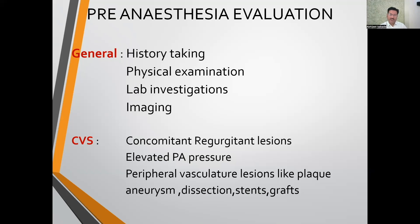In CABG cases, elevated PA pressures pre-operatively should be carefully evaluated because one lung ventilation increases RV afterload and pulmonary artery pressure. Peripheral vascular lesions — plaques, aneurysms, dissections, stents, grafts — especially in the aortoiliac and femoral vessels should be noted, since cannulation is femoral.